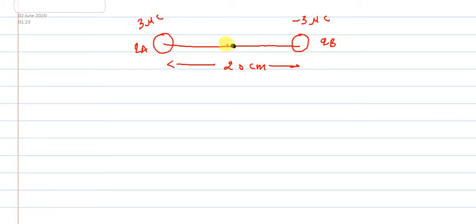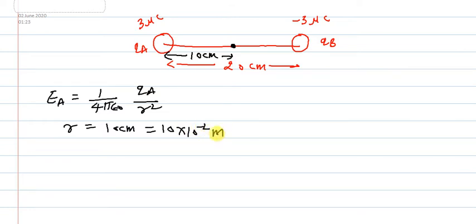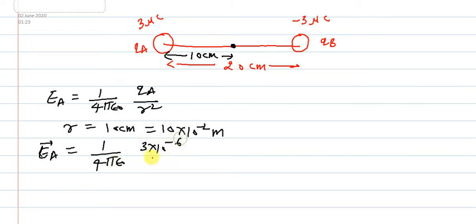The formula for electric field due to charge A is: EA = (1/4πε₀) × qA/r². Here r is the distance from charge A to the midpoint. Since the total distance is 20 cm, the midpoint is at r = 10 cm = 10 × 10⁻² meter. So EA = (1/4πε₀) × (3 × 10⁻⁶) / (10 × 10⁻²)².